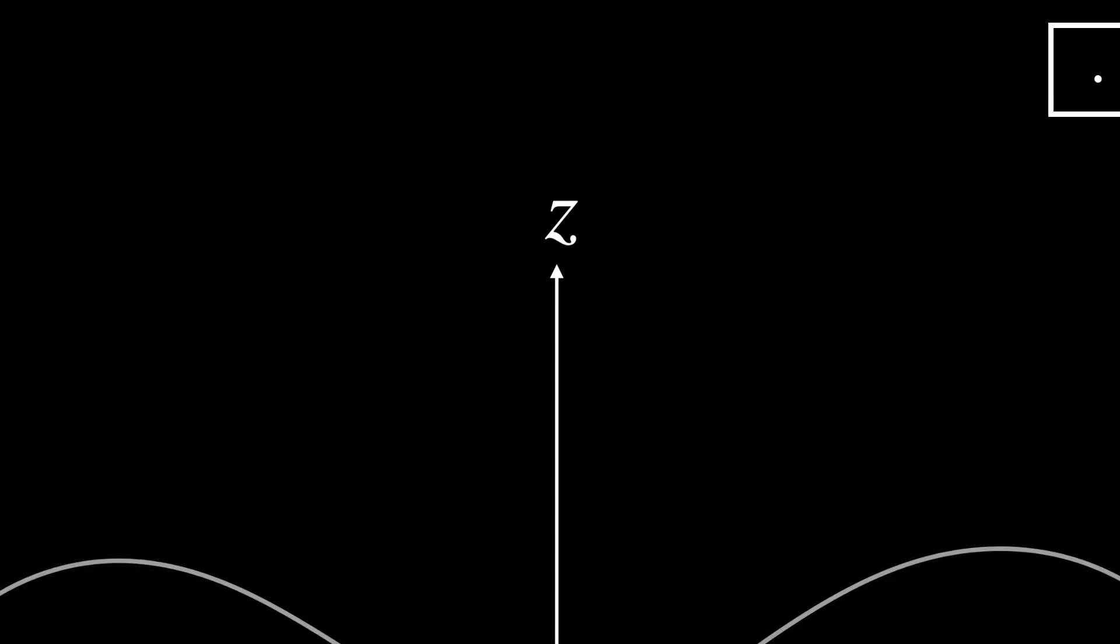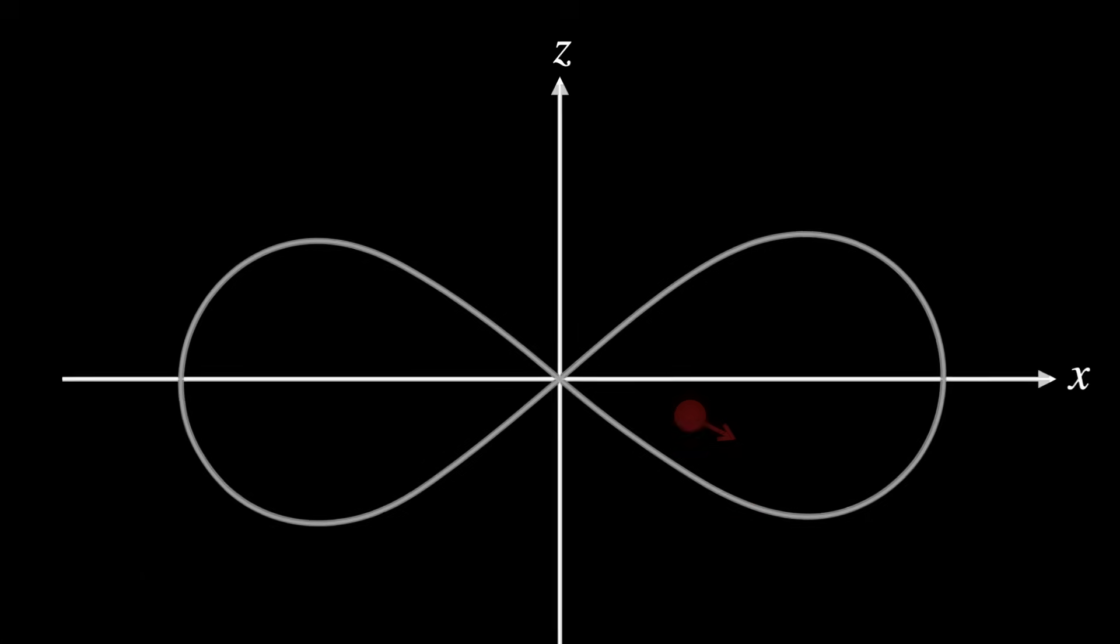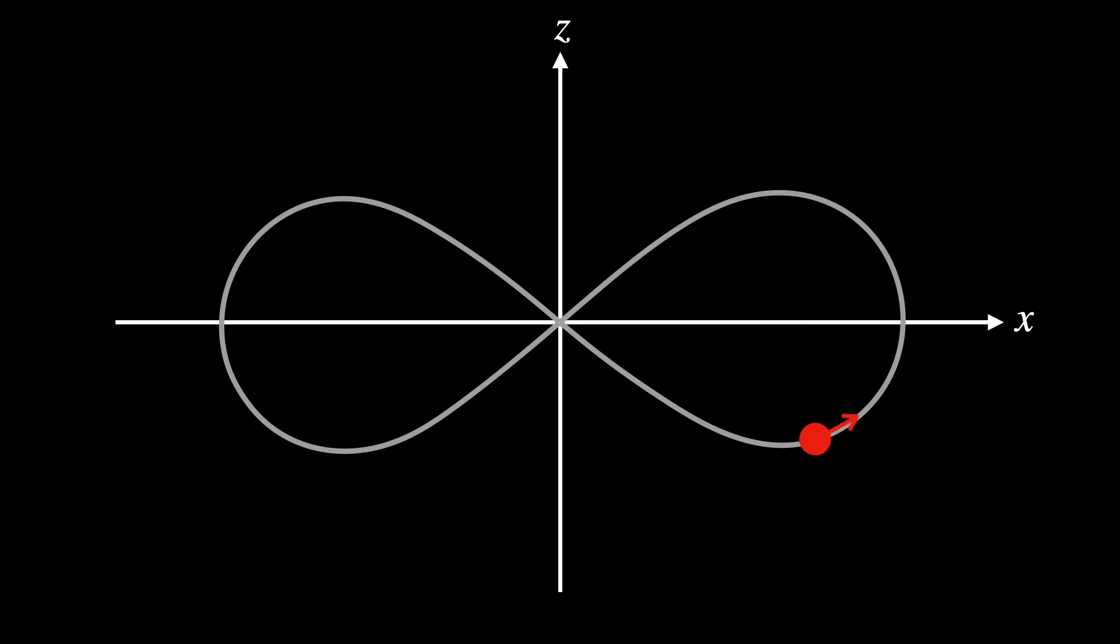You'll see shortly why we chose XZ rather than the more traditional XY Cartesian plane. Imagine a point traveling along this figure 8. It would not cross the intersection this way, but rather this way.